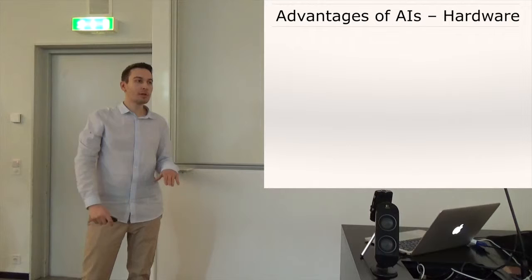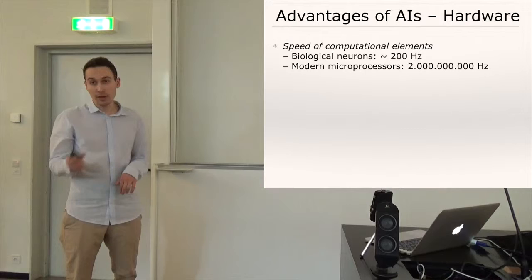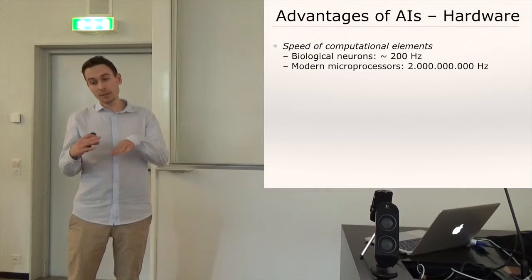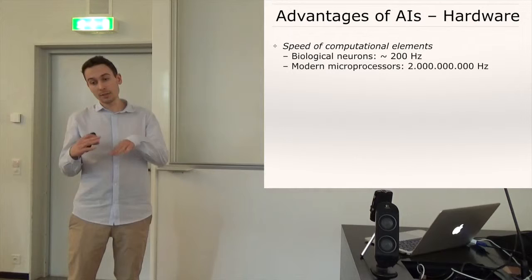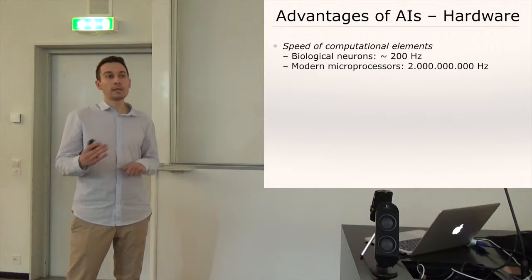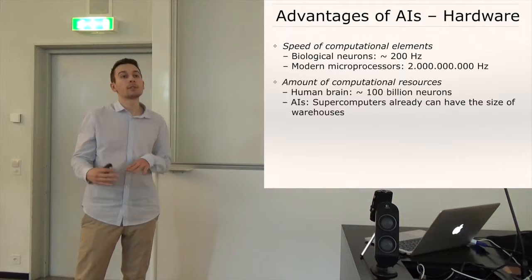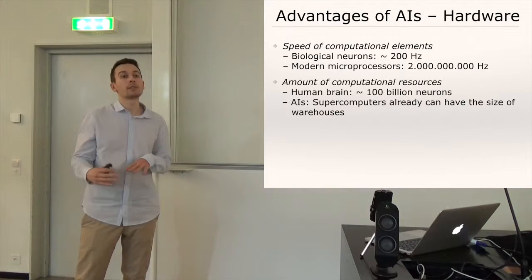So okay you might be convinced that sure there's a probability that superintelligence AI will be created in this century but it won't matter so much. But actually AIs could have a lot of advantages. At first they would have several hardware advantages and I will just mention here two. The first factor to consider is the differences in speed of their computational elements. A biological human, biological neuron, a human brain just fires at a peak speed of around 200 times per second whereas modern microprocessors already operate 10 million times faster.